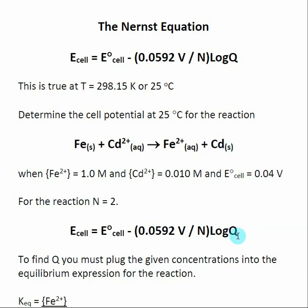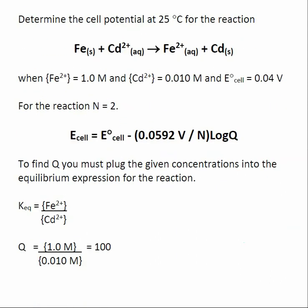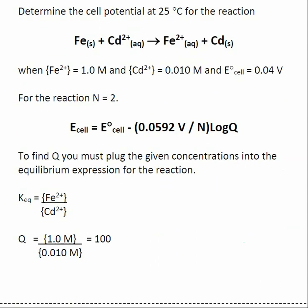The other thing we need to do is find Q. Q is the same thing we calculated when looking at equilibrium expressions - taking the equilibrium expression for a reaction and plugging in the non-equilibrium values. For this reaction, the equilibrium expression is products divided by reactants. But remember, solids do not show up in the expression.